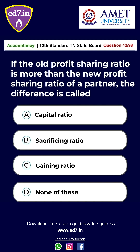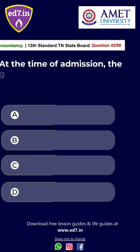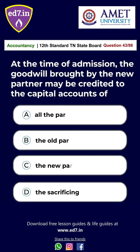Question number 42: If the old profit sharing ratio is more than the new profit sharing ratio of a partner, the difference is called — Option A: capital ratio, Option B: sacrificing ratio, Option C: gaining ratio, Option D: none of these. The answer is Option B, sacrificing ratio.